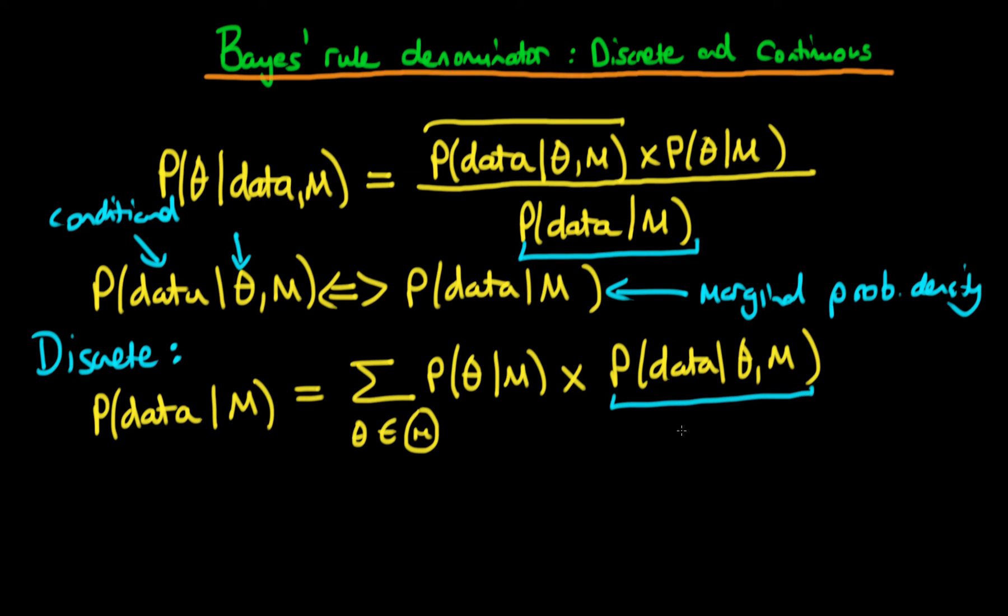This term here is what we call a likelihood. And this term here is what we call a prior. So it's essentially the sum across all values of theta of the numerator, the entire numerator now because now we're also including the prior.